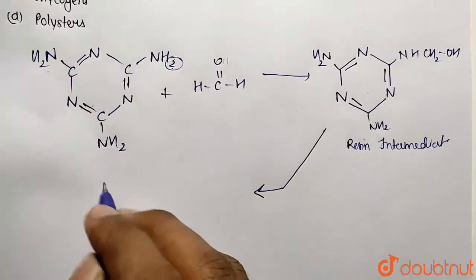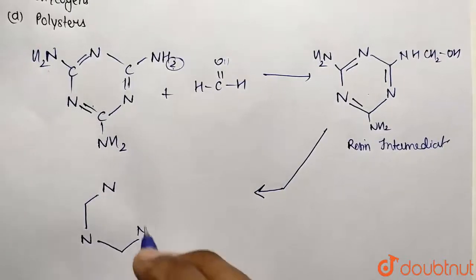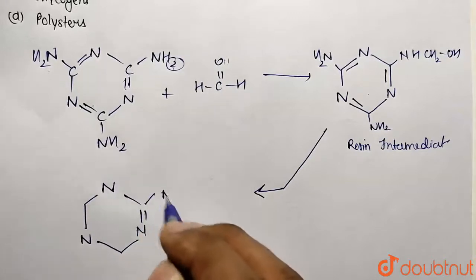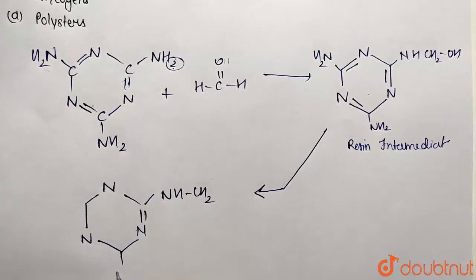So how will the structure look after the polymerization? It's going to contain the same unit N which is being taken like this, and this side we are having NH and CH2. So this is going to contain, let me finish with the structure.